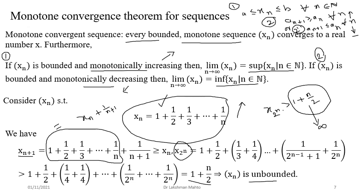Since xn is unbounded, it is divergent, and the limit of the sequence is positive infinity. This shows that the harmonic series diverges. In the next class we will begin the topic of series, and within a few classes we will move on to limits, continuity, and differentiability.